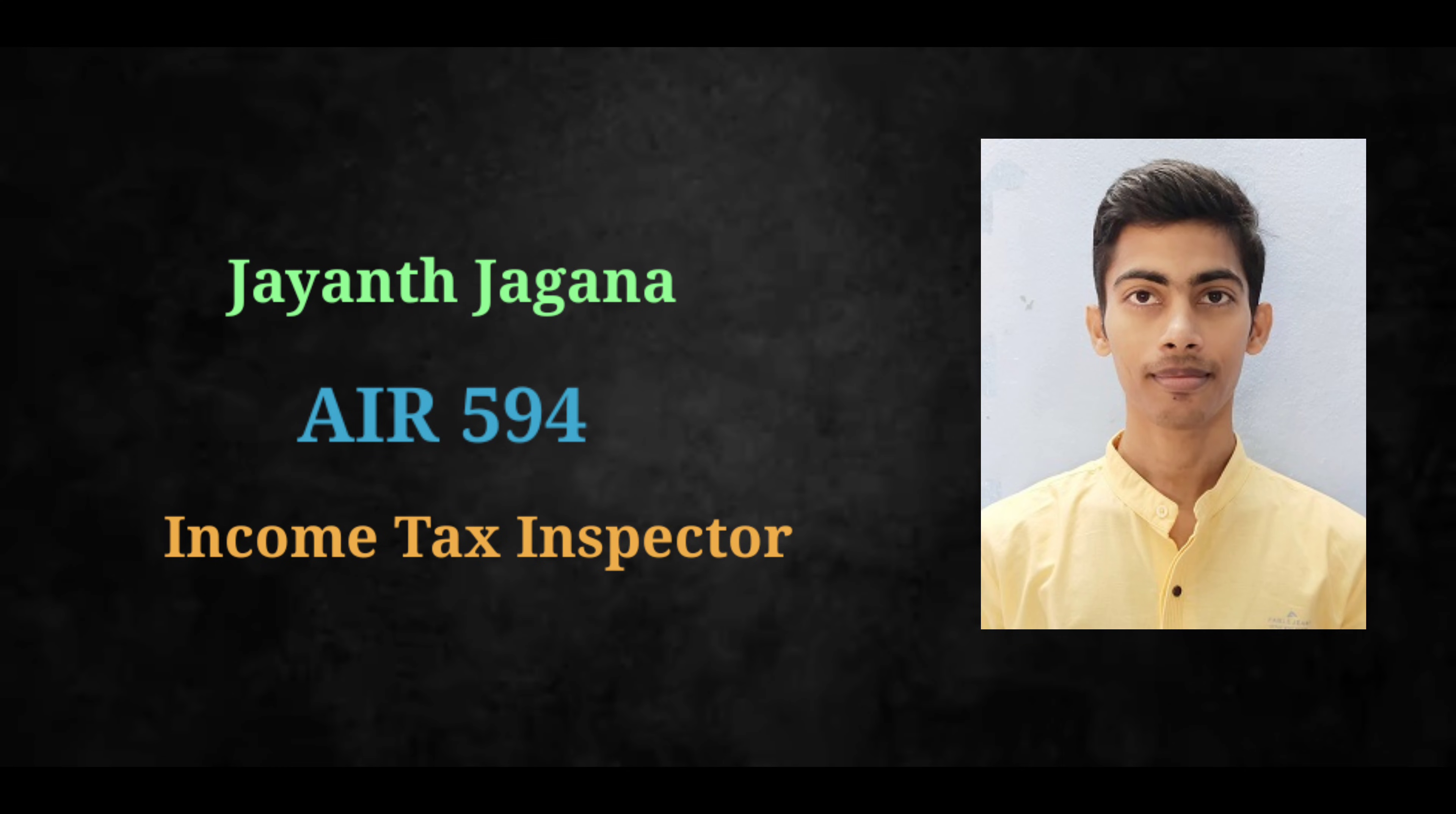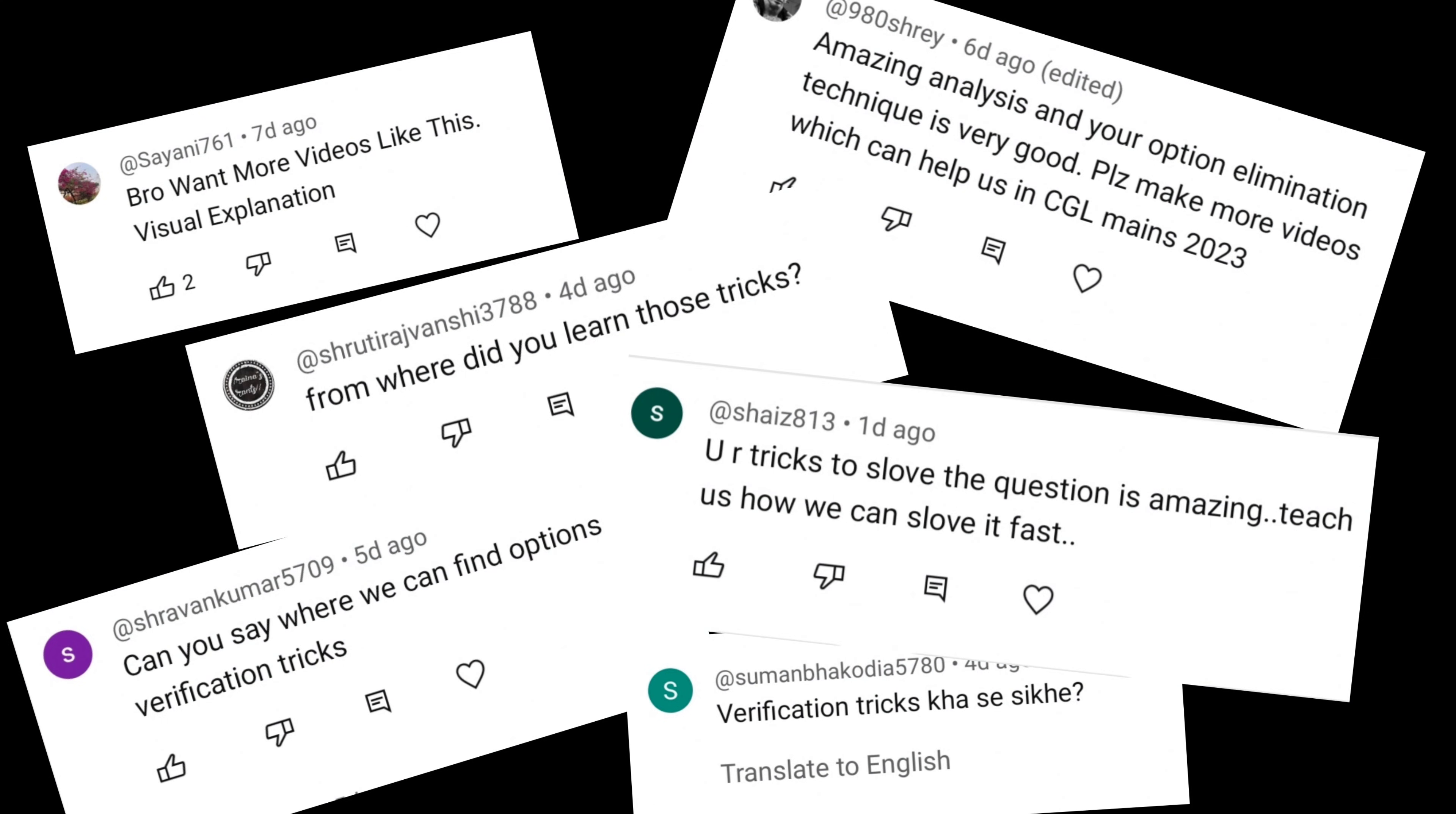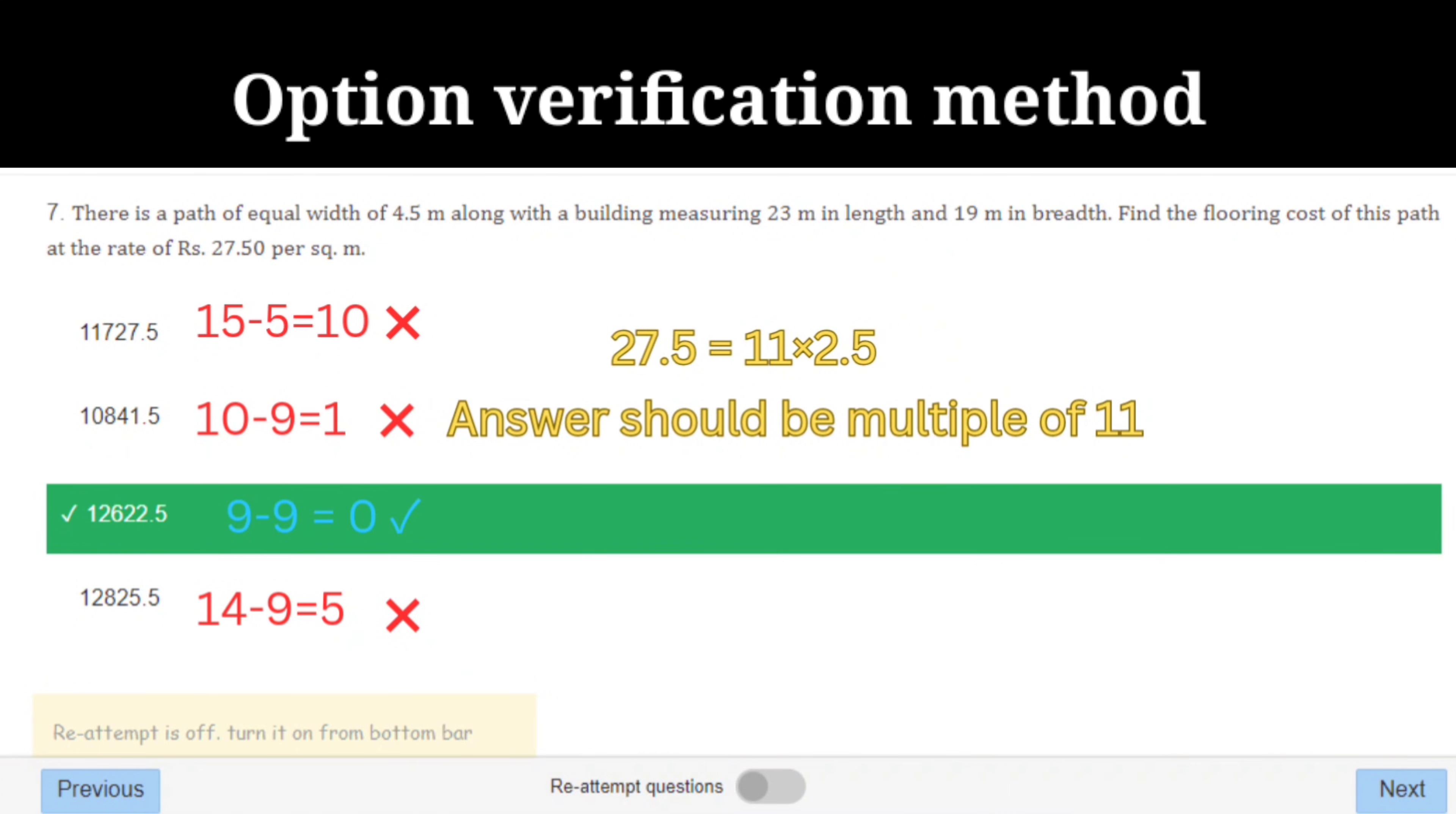Hello everyone, this is a brief introduction about me. I got selected as Income Tax Inspector in SSC CGL 2022. This is my scorecard - I got 87 by 90 in quant. In my previous video, I told you about the option verification method, and a lot of people asked me to explain it in detail, so I am uploading this video. I hope it helps you in your preparation. Let's get started.